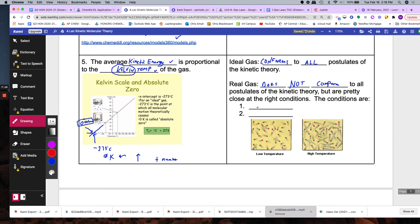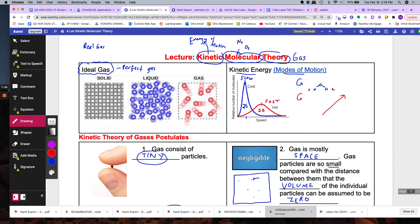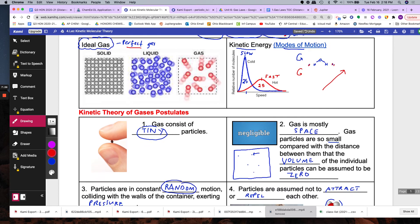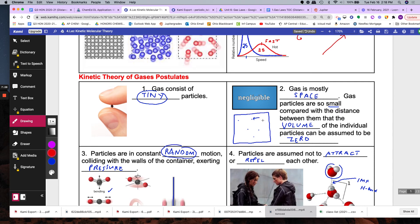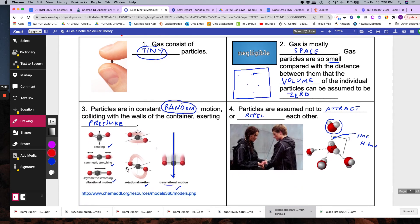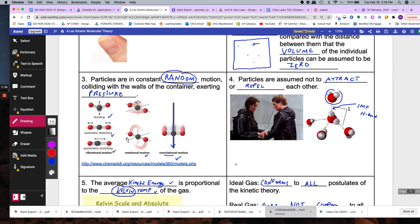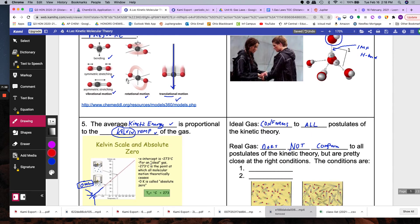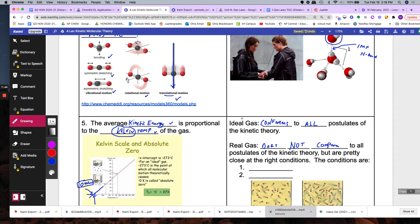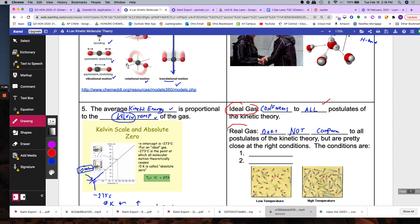So let me summarize. The ideal gas law, the perfect gas behaves this way. First they're tiny, the volume they take up is small, they have random motion, they exert pressure, they're not allowed to attract or repel and as they get hotter they move faster. Those are the five postulates of the kinetic theory. The ideal gas conforms to all of them. But in reality they may not conform.